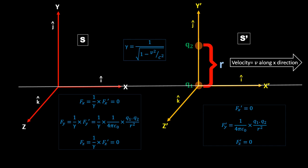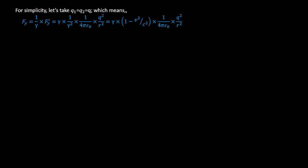For simplicity, let q1 = q2 = q. Then Fy = (1/gamma) · Fy prime. Substituting, Fy = gamma · (1/gamma²) · (1/4πε₀)(q²/r²). Since 1/gamma² = (1 - v²/c²), this gives Fy = gamma · (1 - v²/c²) · (1/4πε₀)(q²/r²).